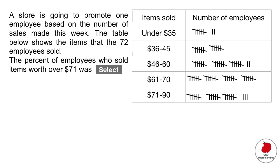We're going to kick it off with a drop down menu question. A store is going to promote one employee based on the number of sales made this week. The table shows the items that the 72 employees sold. What percent of employees who sold items worth over $71? If you click this drop down menu it gives you several percentages.